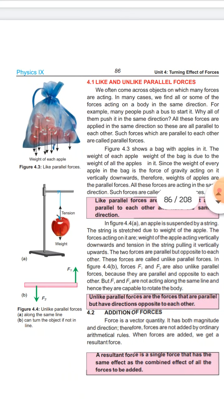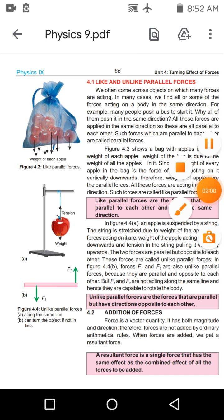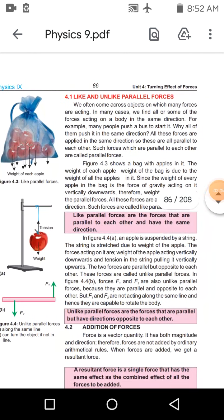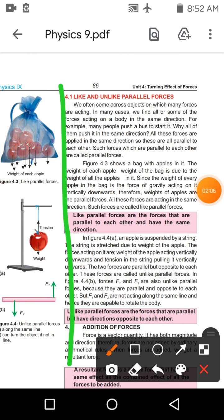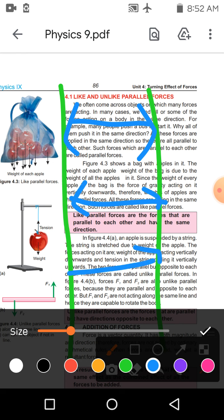اس کے لئے آپ کو سب سے پہلے like اور unlike parallel forces پڑھنی پڑیں گی۔ لیکن اس سے بھی پہلے آپ کو یہ پڑھنا پڑے گا کہ parallel forces کیا ہوتی ہیں۔ کوئی بھی دو چیزیں parallel ہوتی ہیں تب جب ان کے درمیان distance ان کی پوری length میں constant رہے — یعنی parallel lines never meet each other۔